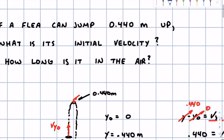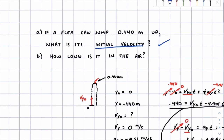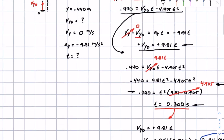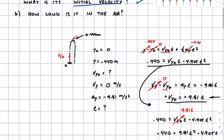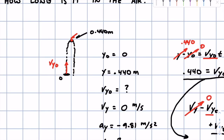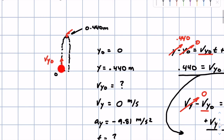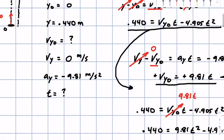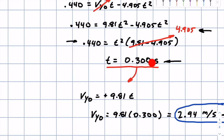Now we're going to see how long the flea is in the air. We could set up a second phase for the downfall, but because of the conservation of energy, it's going to take the same amount of time to get to the top as to come back down. If you verify it — with initial velocity zero and final position zero — you'll find that time is exactly 0.300 seconds.